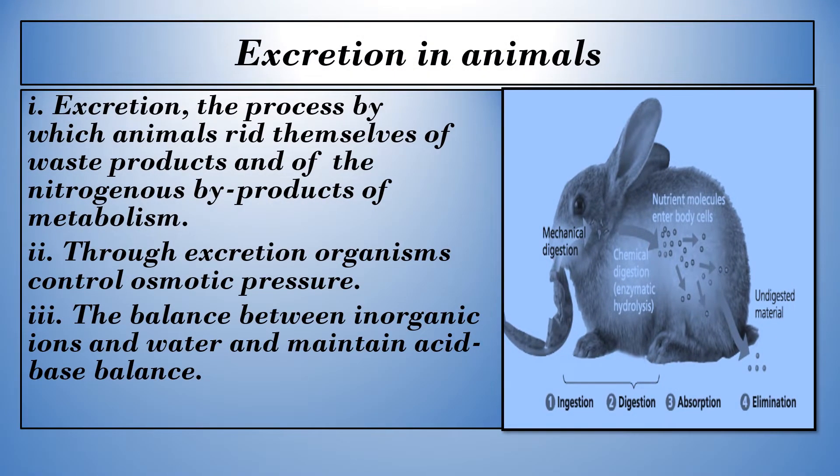Excretion in animals: in the process of excretion, animals rid themselves of waste products and of the nitrogenous by-products of metabolism. Through excretion, organisms control osmotic pressure. Excretion keeps the balance between inorganic ions and water, and maintains acid-base balance.